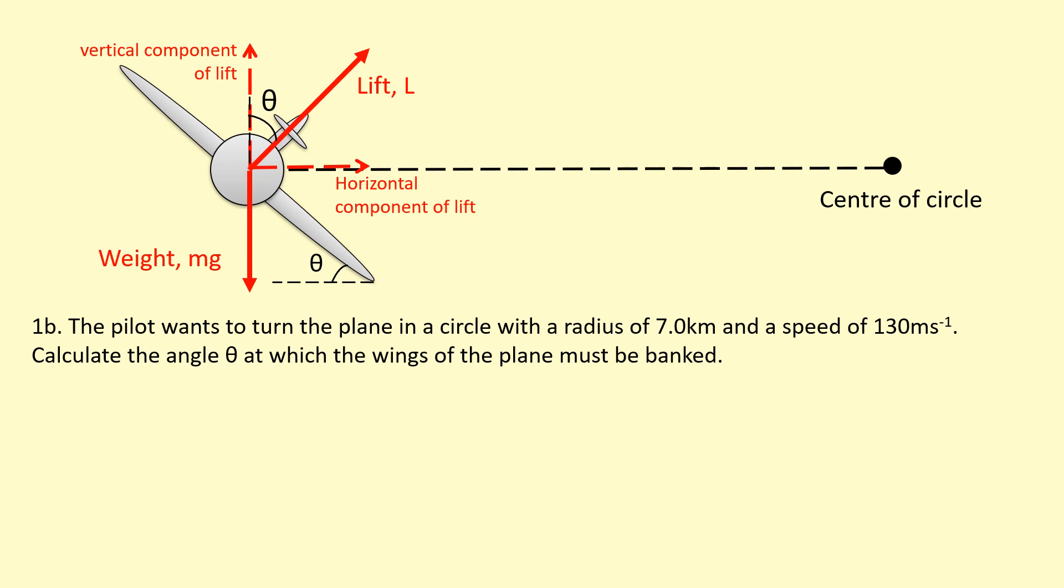Let's start off with the centripetal force itself, which is being provided by the horizontal component of lift. That's going to be L sin θ—it's opposite of theta there. So that is going to equal mv² over r because that's the centripetal force. What about the weight? Well, because the plane is not going up or down, is in equilibrium vertically, we need to balance the vertical component of lift and the weight. So L cos θ, which is the adjacent component there, is equal to mg.